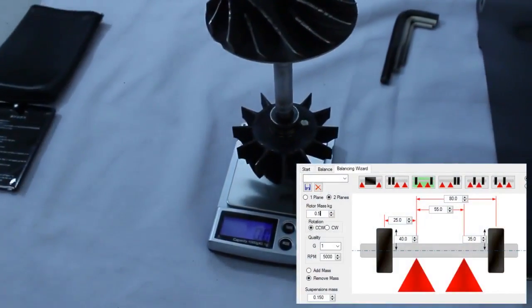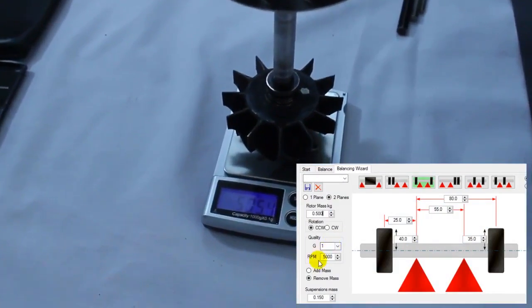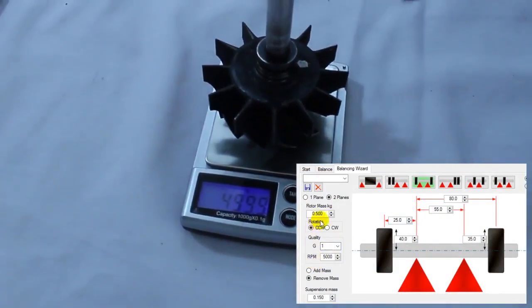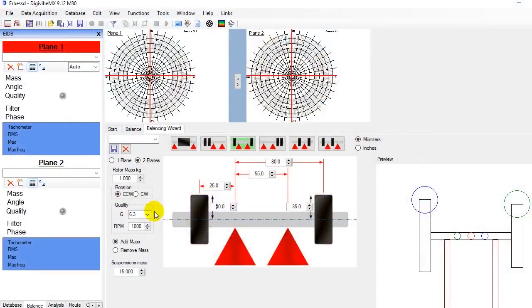We input the rotor's mass, we select two planes and we choose Left Rotation CCW or Right Rotation CW clockwise, seen from plane 1. We set the desired quality grade for this balancing and the nominal working speed of this rotor. We choose if we are going to add or remove mass. The mass of this suspension is 150 grams. In case you need to recover this configuration later, choose a name and save it.